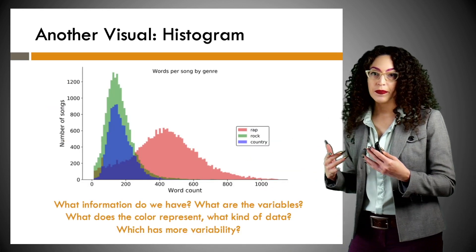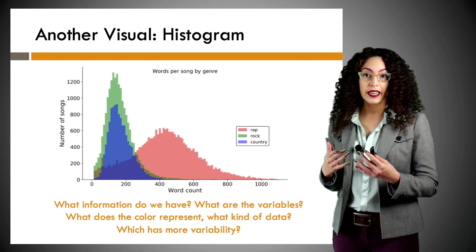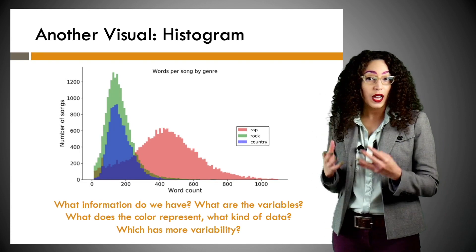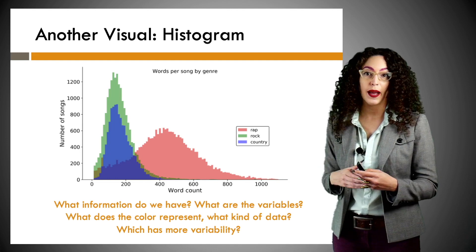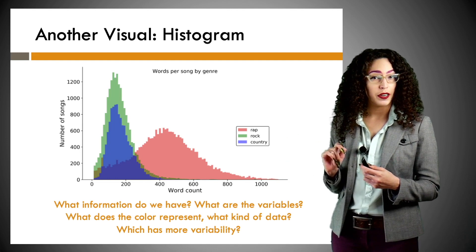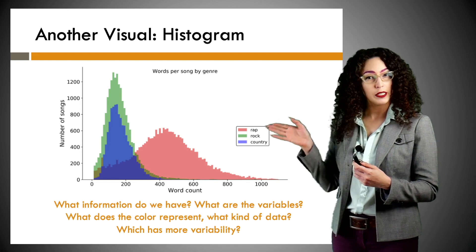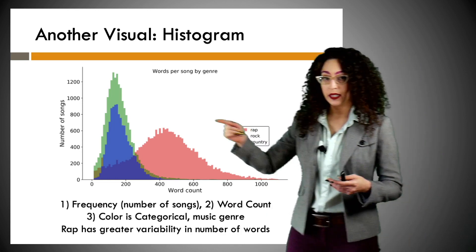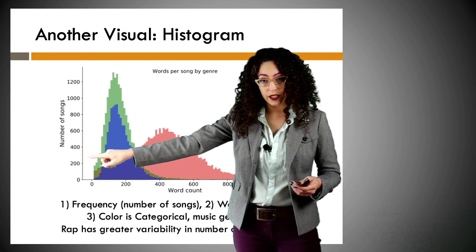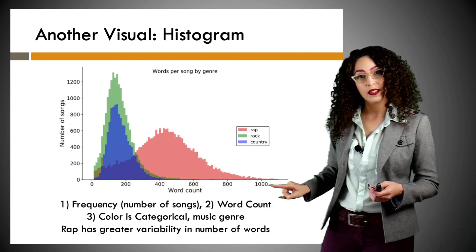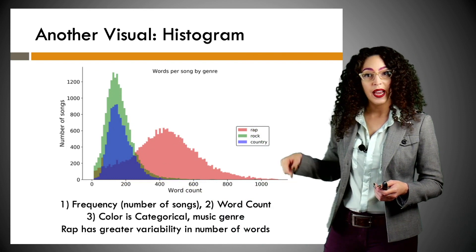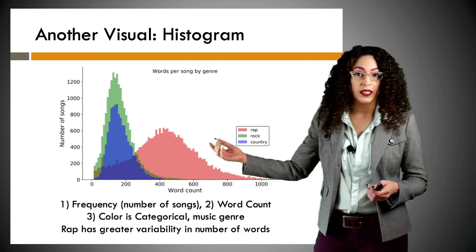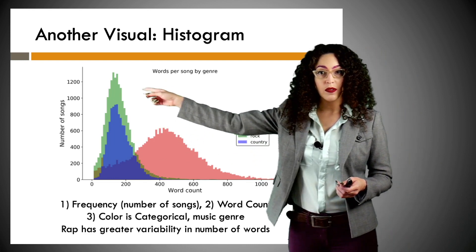Here's another histogram. We have a few different things — what kind of information are we dealing with, what kind of variables, what do the colors represent, and what kind of data is that? So here we have frequency — the number of songs — on the y-axis, and on the x-axis we have the word count. And then we have three distinct groups represented by color: rap, rock, and country.